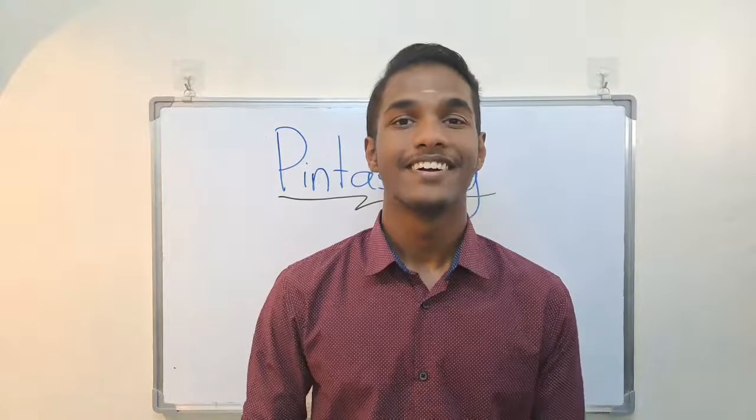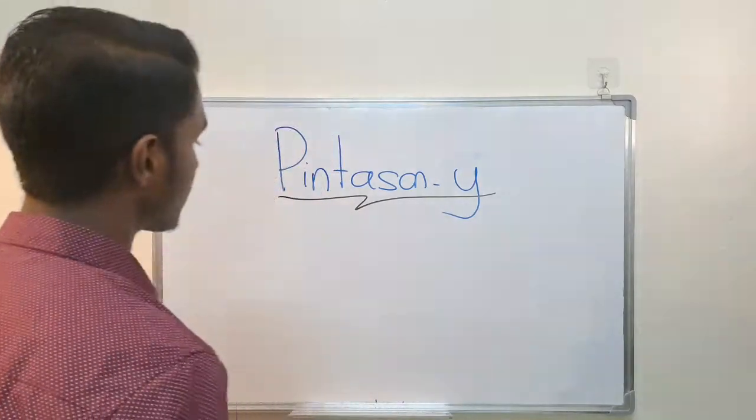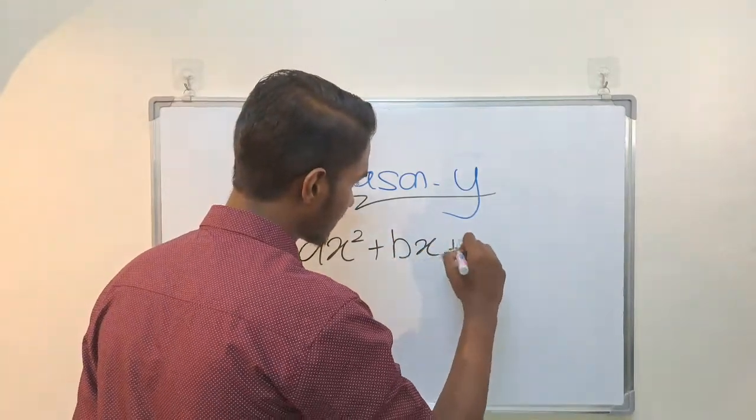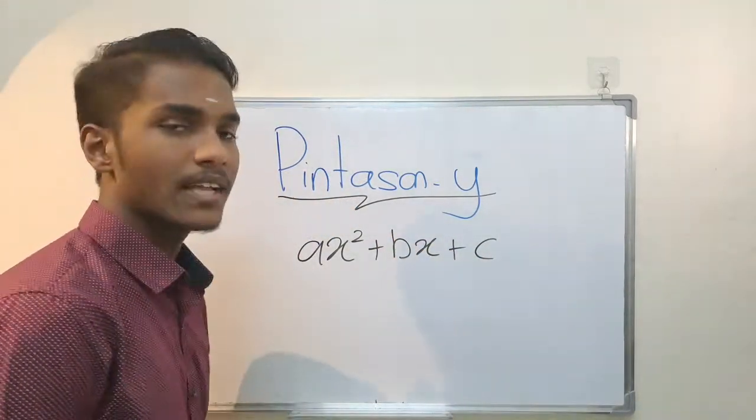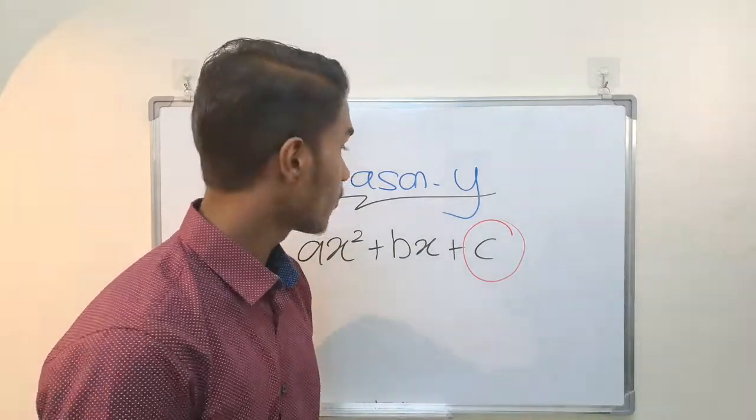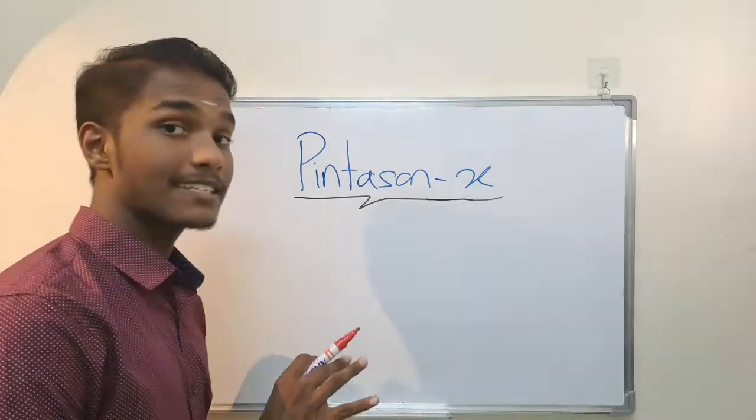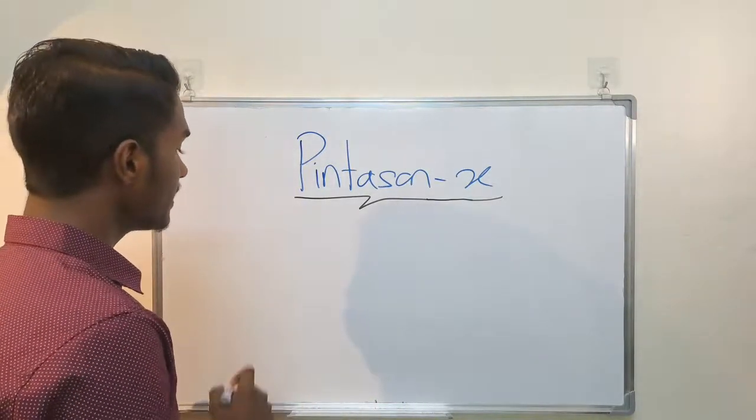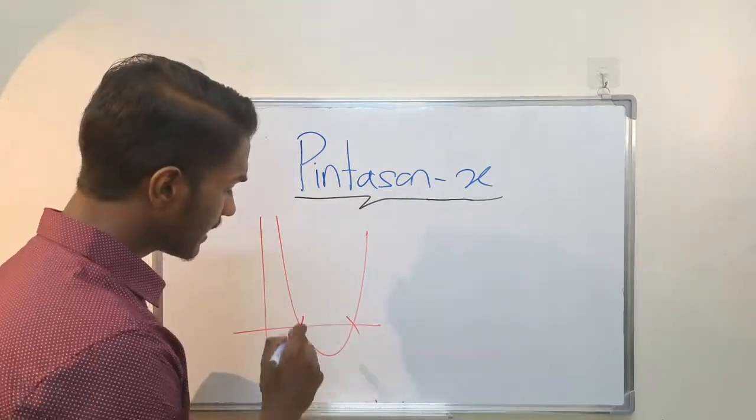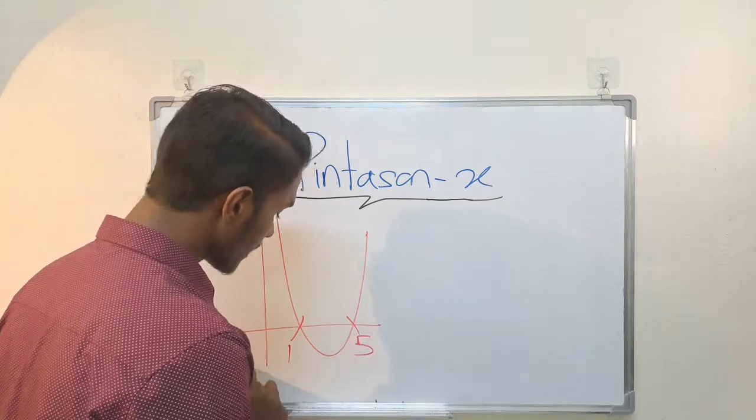This is ax² plus bx plus c. If we use numbers, it's very simple. The c value is the y-intercept. For the x-intercept, we use factorization.